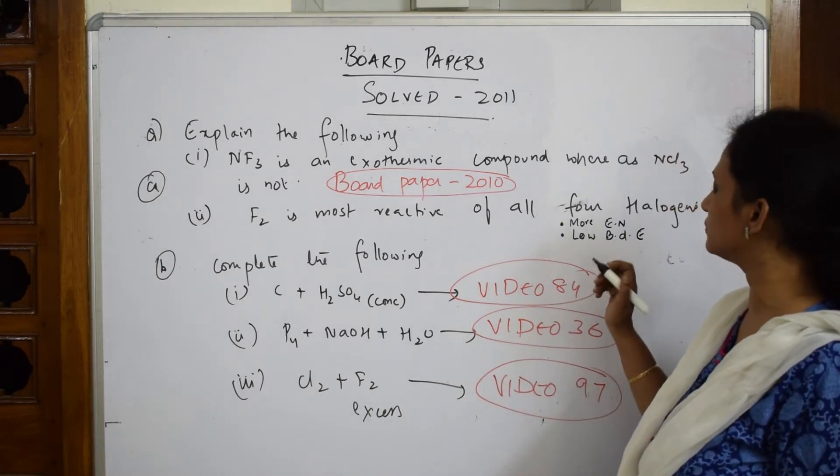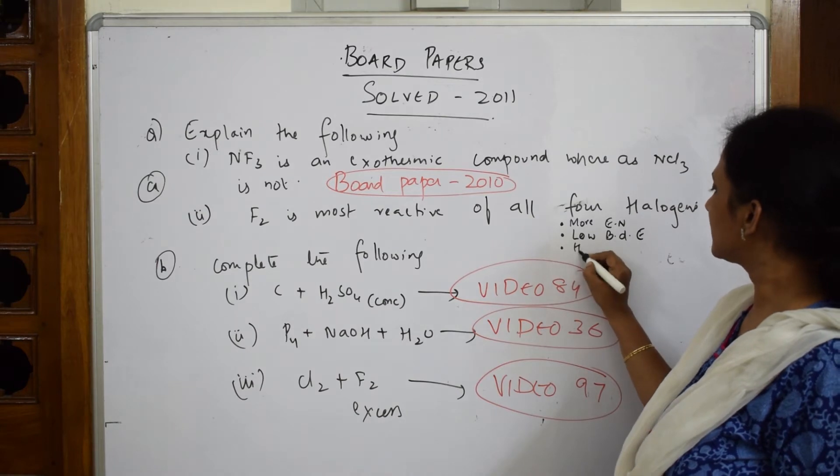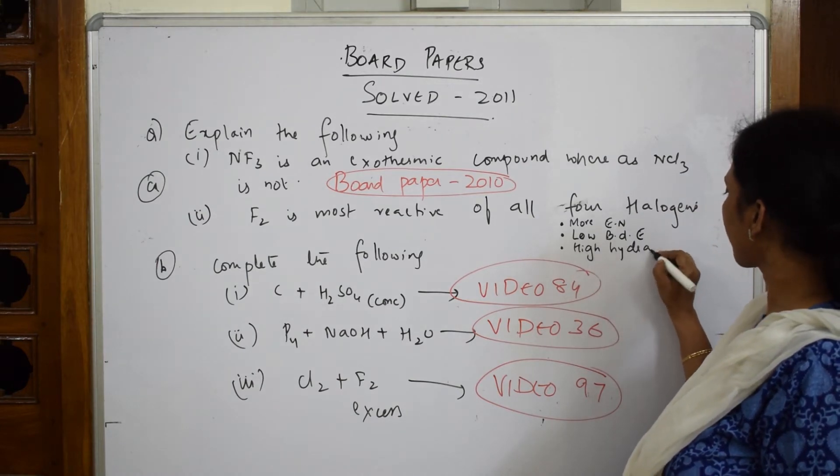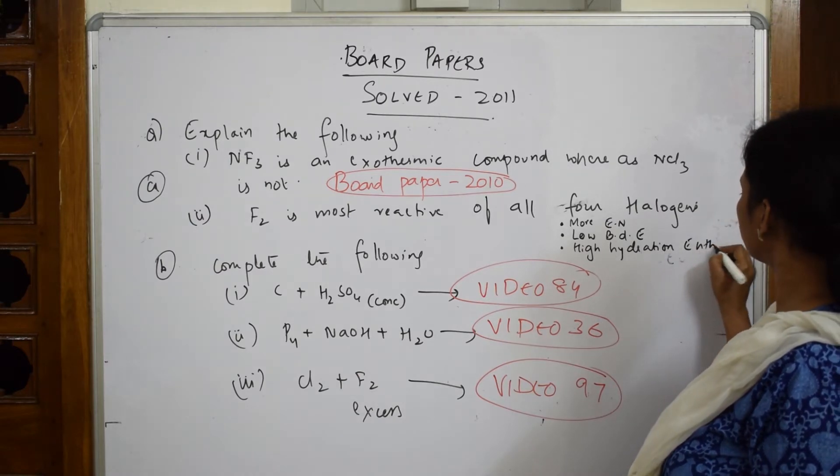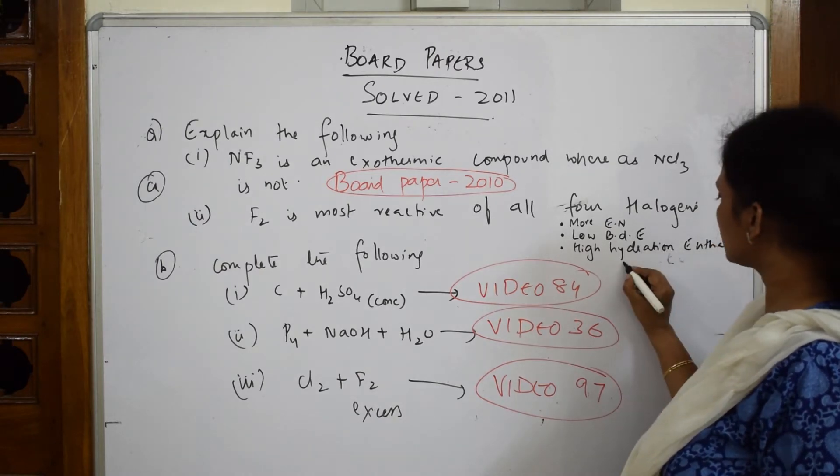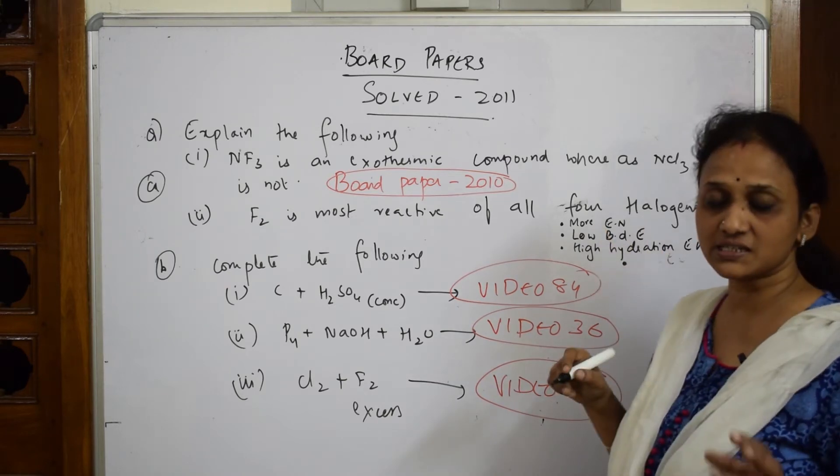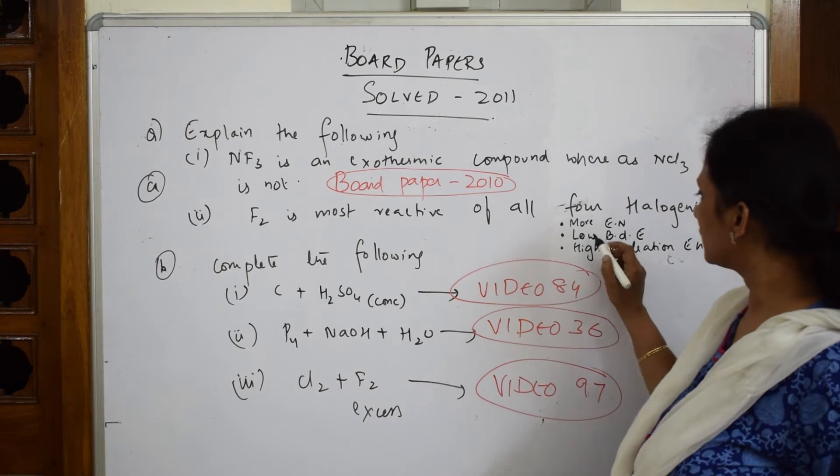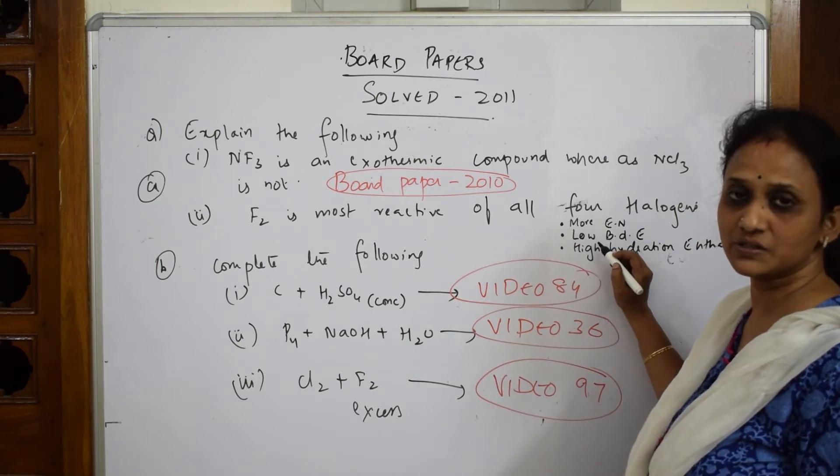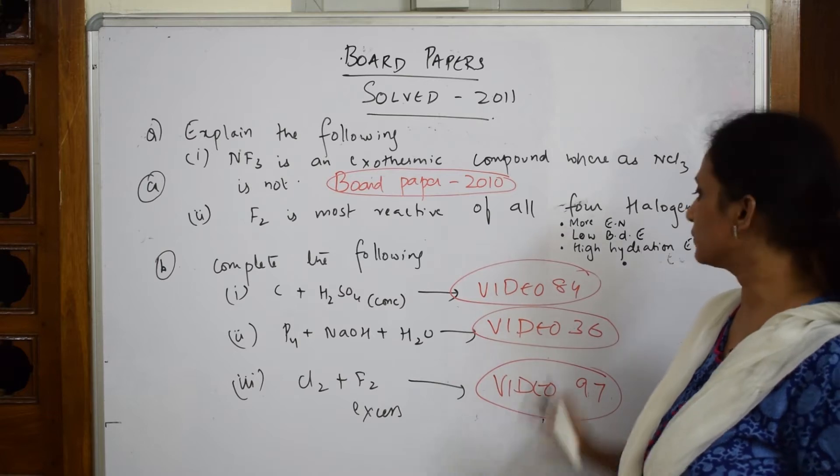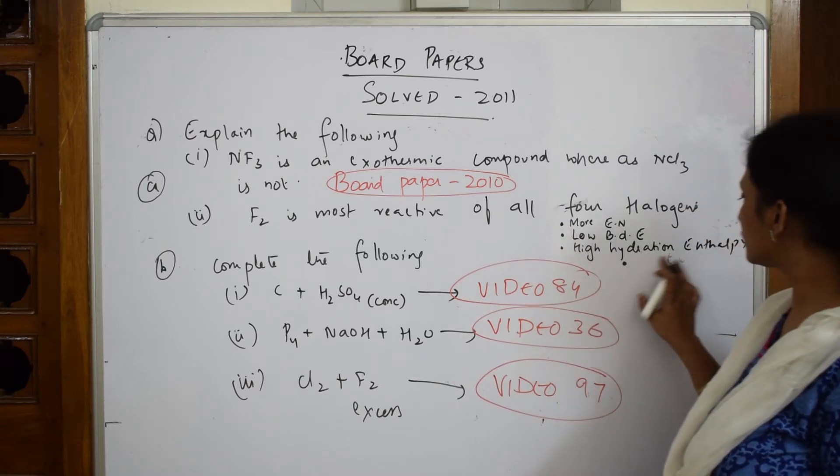Third important - high hydration enthalpy. The last one would be electronegativity is covered. So when the electronegativity is more, automatically lower is the bond dissociation enthalpy, which is only 158 kilojoules per mole. Then high hydration enthalpy.